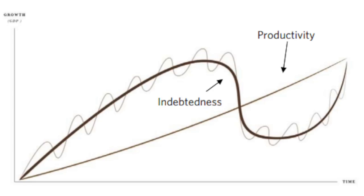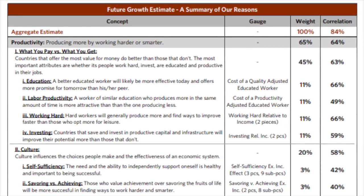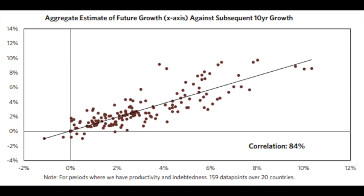Productivity can be brought higher with more debt or lower with deleveraging. Indebtedness however accounts for only 34% of long-term economic growth, and productivity growth accounts for 65% of that growth. They have tested the models for the last 100+ years on a 10-year forecasting basis and it returns a correlation of 84% between economic growth and the principles of productivity and debt.